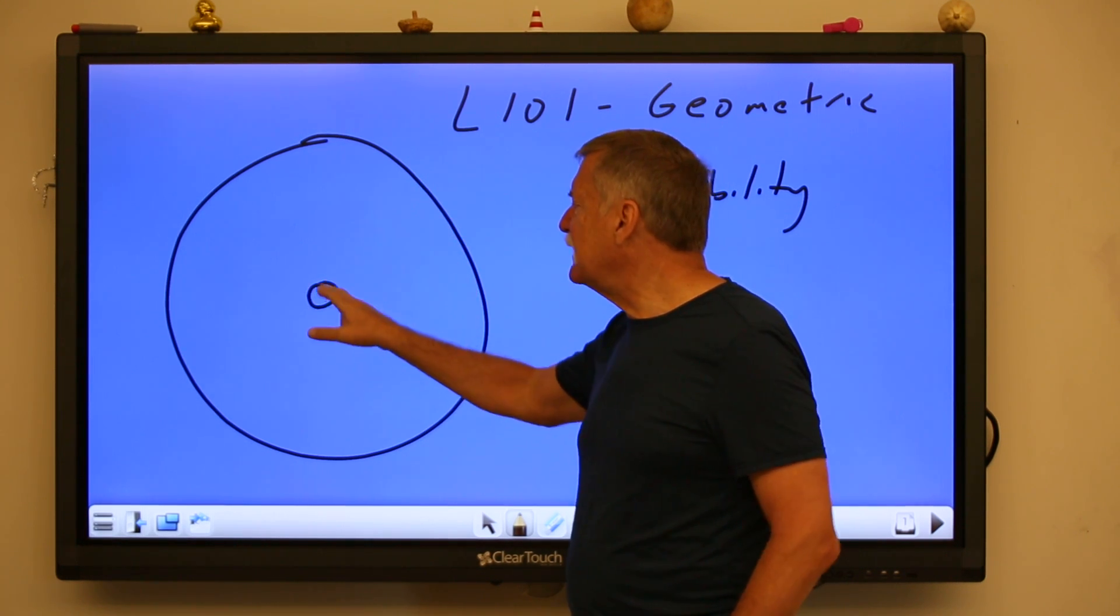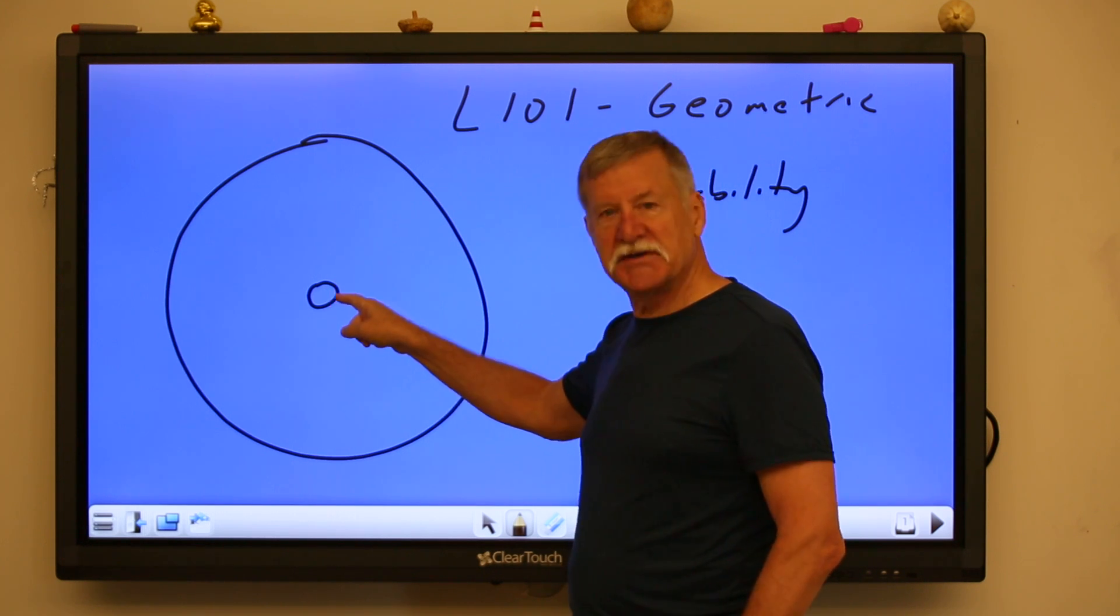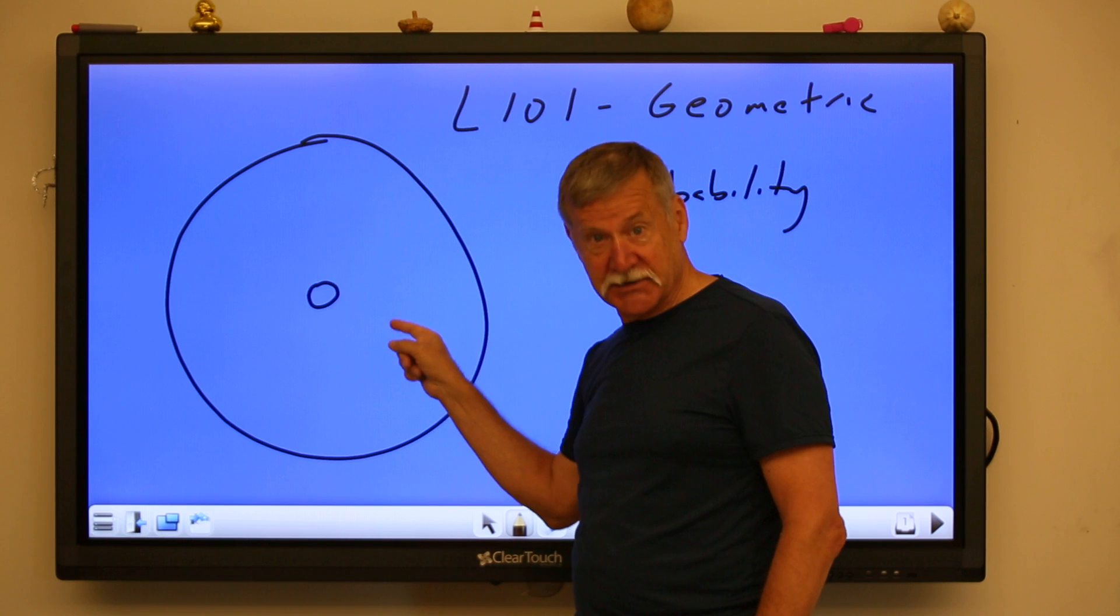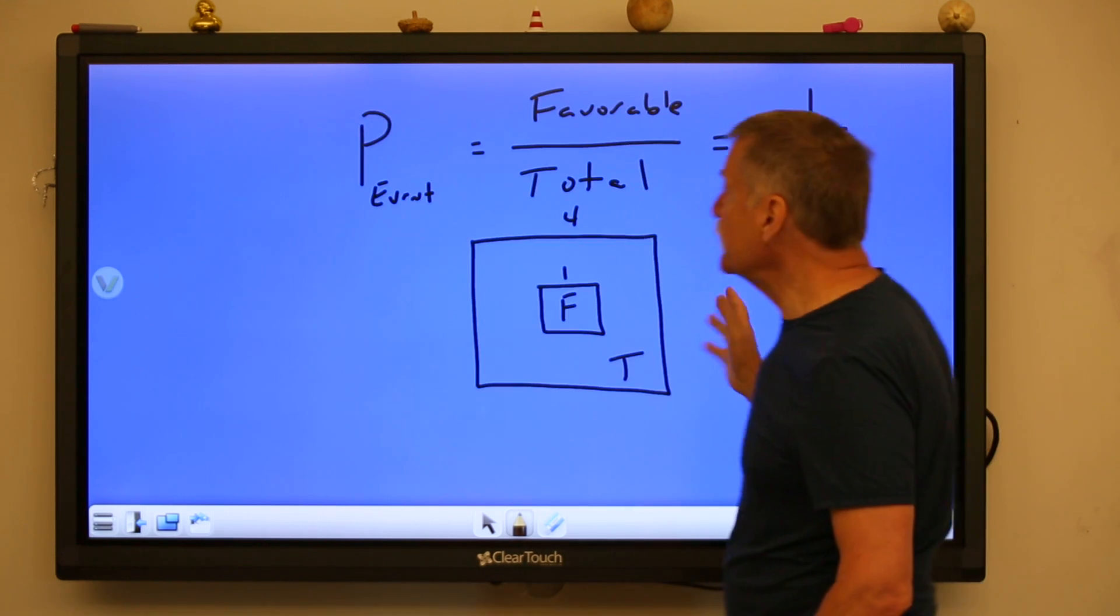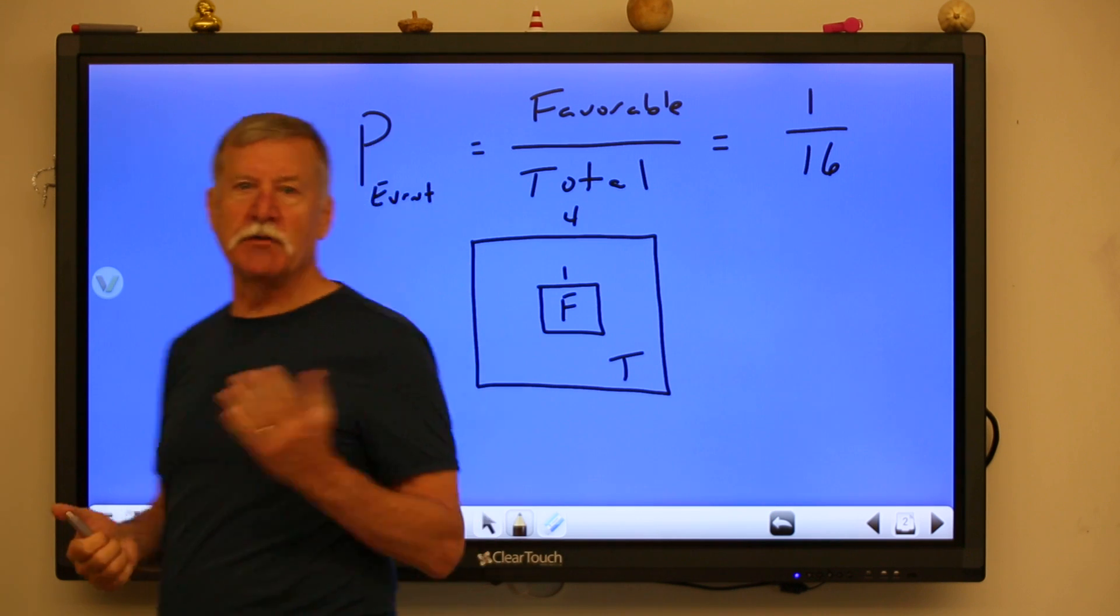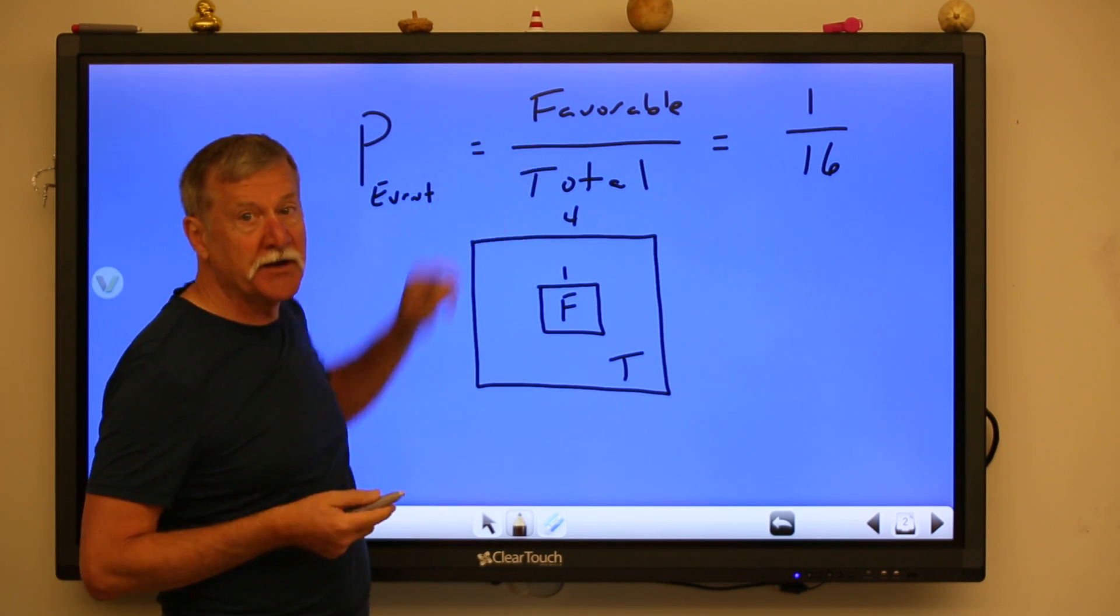How do we give the probability, the chance, the likelihood that your beanbag is going to hit that little circle inside the big circle? Well we understand of course that probability is a ratio. It compares the favorable outcomes to the total things that could happen.